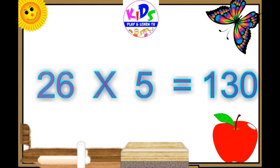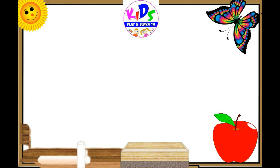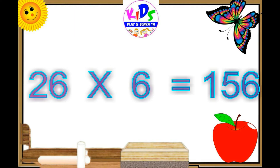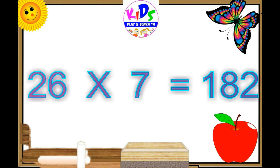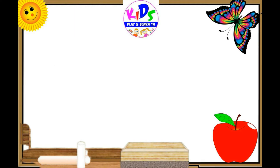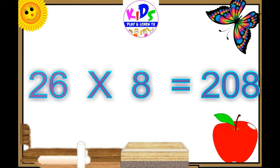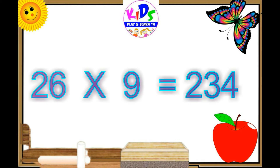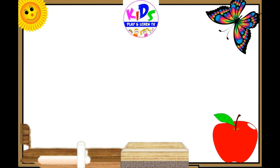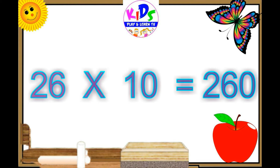Twenty-six fives are one thirty. Twenty-six sixes are one fifty-six. 26 sevens are 182. 26 eights are 208. 26 nines are 234. 26 tens are 260.